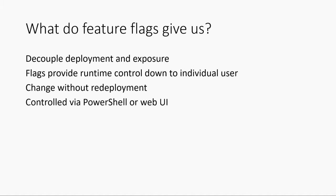It's controlled by PowerShell or WebUI. PowerShell, of course, for automation — we may do a deployment, and after the deployment's done, we may go turn on a feature flag. That can all be fully automated. My best example is SSH. When we rolled out SSH, we had basically one feature flag that controlled it.